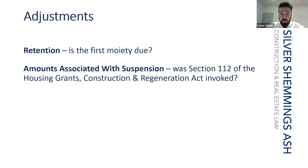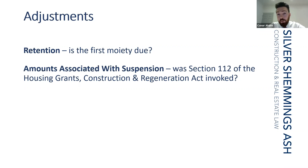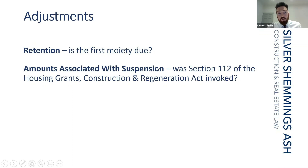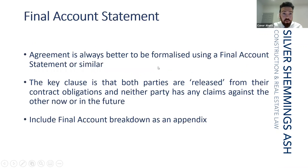Final item on adjustments: amounts associated with suspension. Has Section 112 of the Housing Grants, Construction and Regeneration Act been invoked? If the employer failed to make a payment and the contractor served notice that he was going to suspend the work and subsequently did suspend the work, then any demobilization and remobilization costs associated with that go into the final account as adjustments.